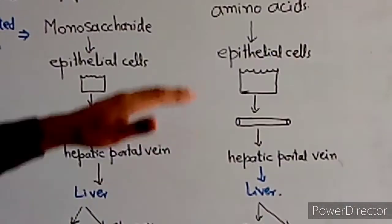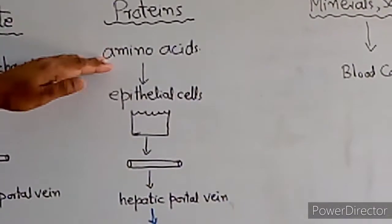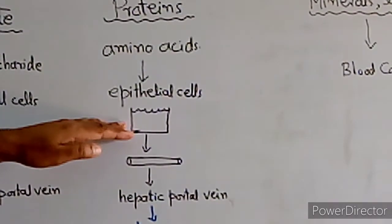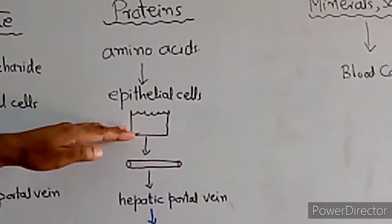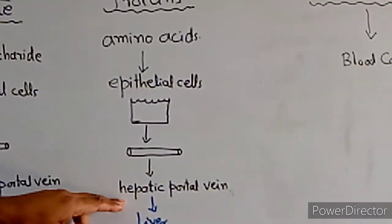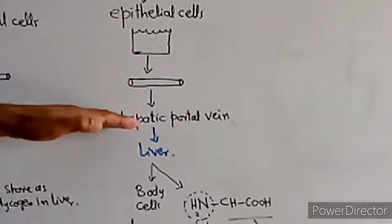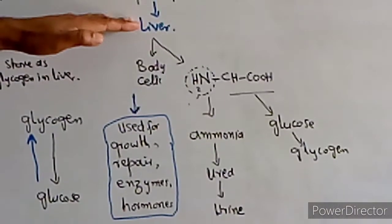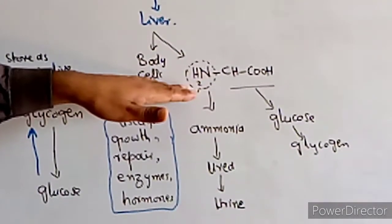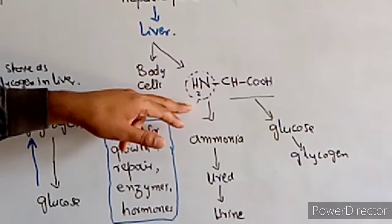Protein, which is an end product, breaks down into amino acids. Amino acids enter the epithelial cells by simple diffusion. The epithelial cells pass the amino acids into the blood. The amino group is converted through a process called deamination.